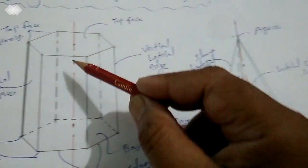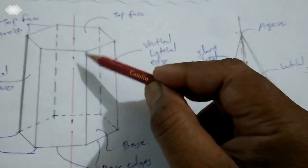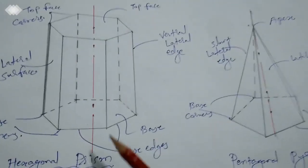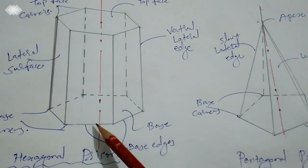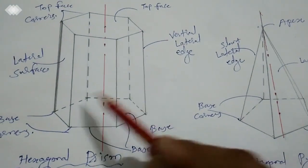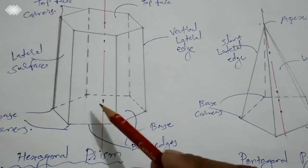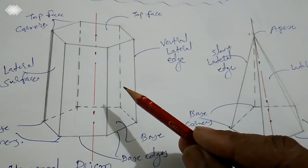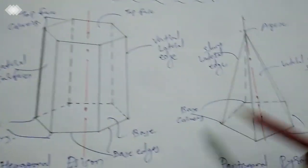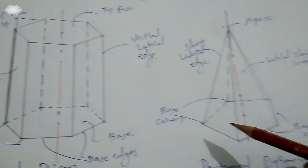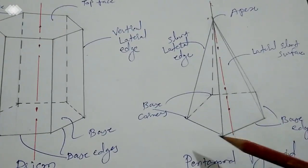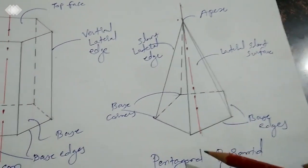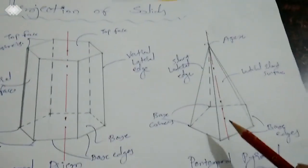Now let's see the elements of a prism: top face, top face corners, top face edges, base edges, and base corners — six base corners as it is a hexagon. For a pyramid: base corners, base edges, slant lateral edges, slant triangular lateral surfaces, and apex. The nomenclature is the same pattern — base edges, base corners — five in this case as it is a pentagonal pyramid — and apex.